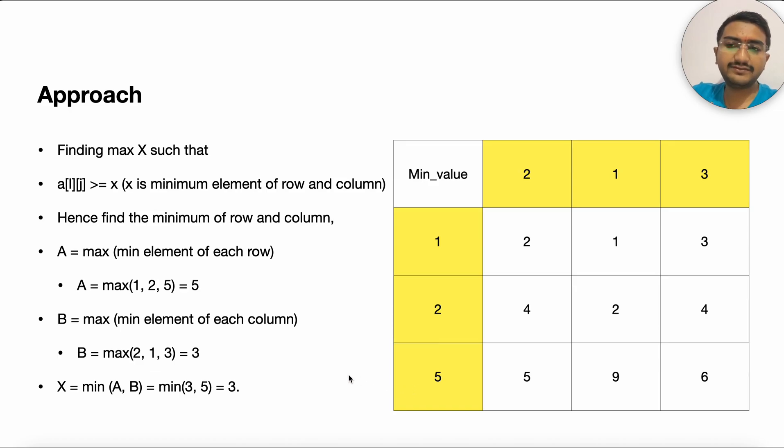And then b is the maximum of the minimum element of each column. So it is maximum of 2, 1, 3 that is 3. So given that your x will lie in this particular row and this particular column. Why so? Because you want to have the maximum value present.